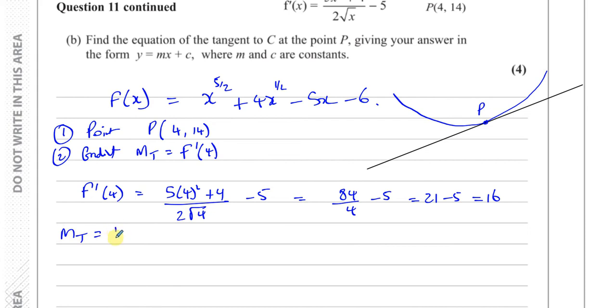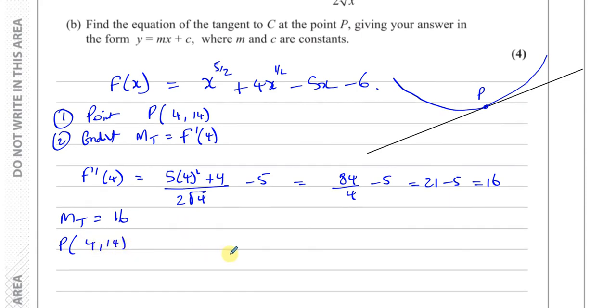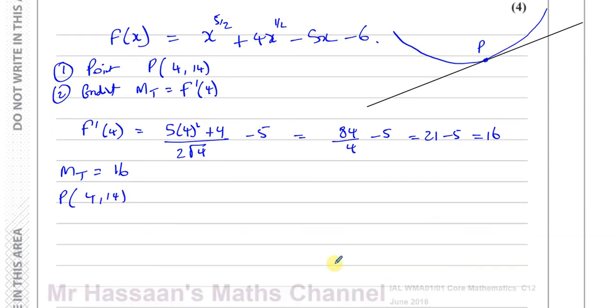So f dash of 4 equals 5 times 4 squared plus 4, all over 2 times the square root of 4, minus 5. That gives 5 times 16, which is 80, plus 4, so 84 divided by 2 times 2, which is 4, minus 5. That gives 21 minus 5, which equals 16. So the gradient at point P is 16.